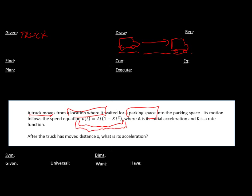We want to do some kinematics with calculus, so we're going to start with a function of time. We know that a and k are constants. This a is going to be the initial acceleration, and k is sort of a rate — a square rate — because it's multiplied by t squared. So we end up with this velocity function: a times t times (1 minus k·t²).